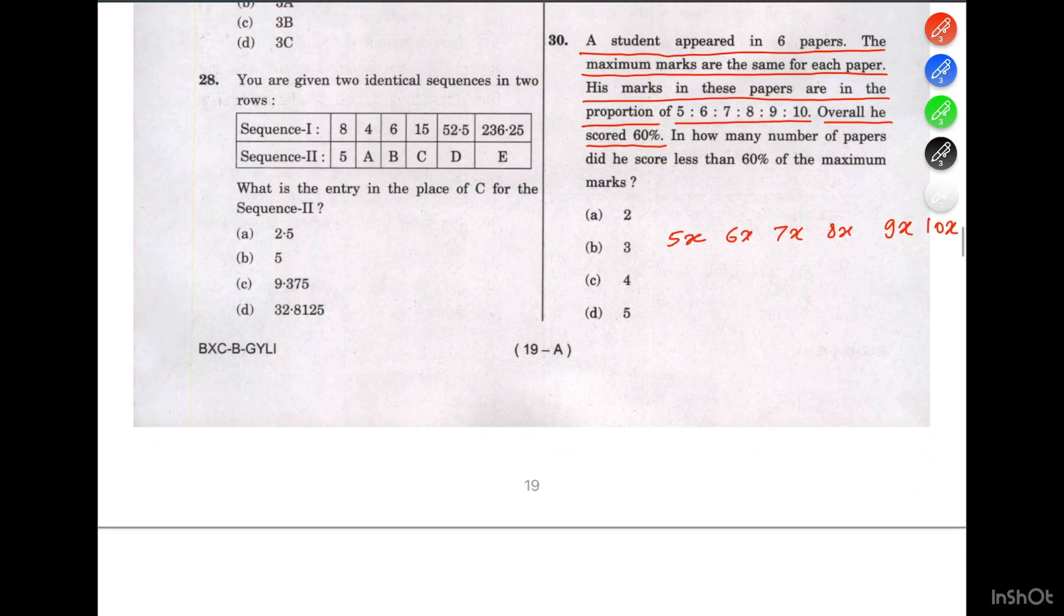Overall he scored 60%. If we add all these numbers, we get 7 plus 8 equals 15, 6 plus 9 equals 15, and 5 plus 10 equals 15. So 15 times 3 equals 45x. They're saying 45x is 60%.